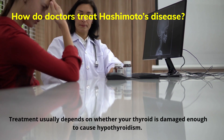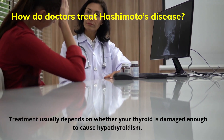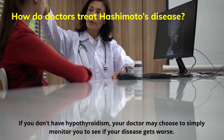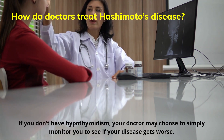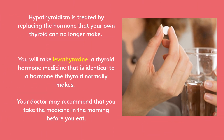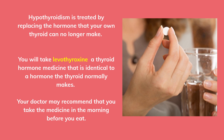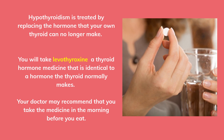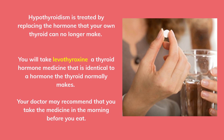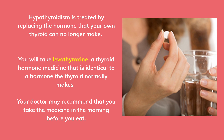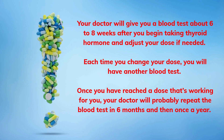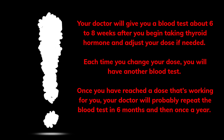How do doctors treat Hashimoto's disease? Treatment usually depends on whether your thyroid is damaged enough to cause hypothyroidism. If you don't have hypothyroidism, your doctor may choose to simply monitor you to see if your disease gets worse. Hypothyroidism is treated by replacing the hormone that your own thyroid can no longer make. You will take levothyroxine, a thyroid hormone medicine identical to a hormone the thyroid normally makes. Your doctor may recommend taking the medicine in the morning before you eat, and will give you a blood test about 6 to 8 weeks after you begin taking it, adjusting your dose if needed.